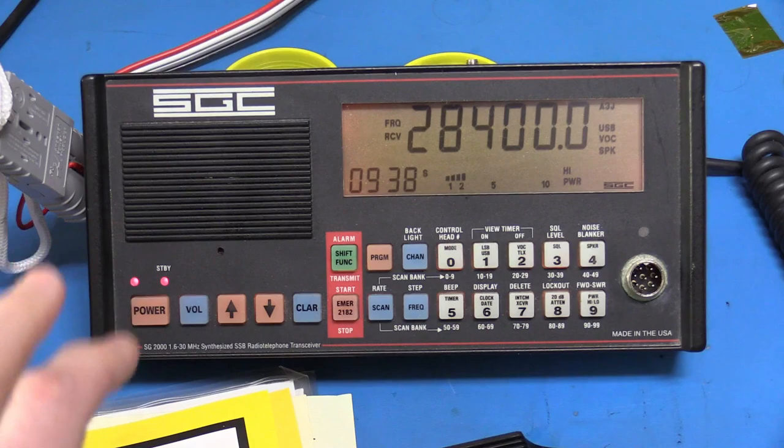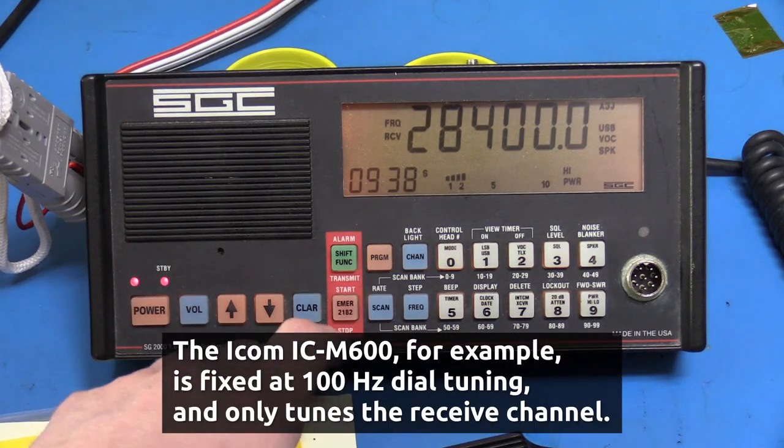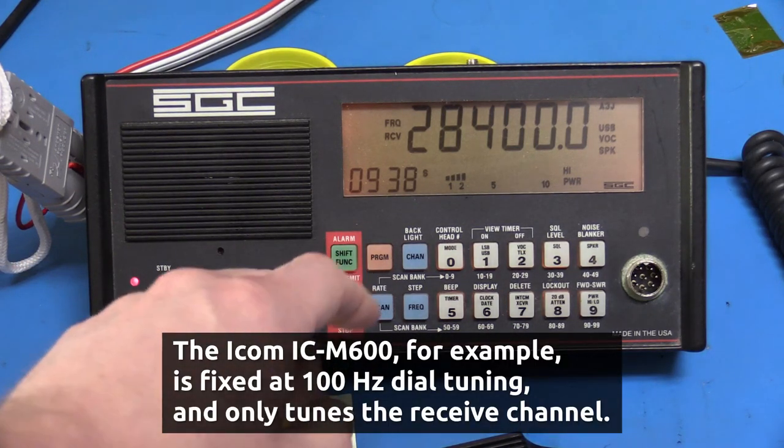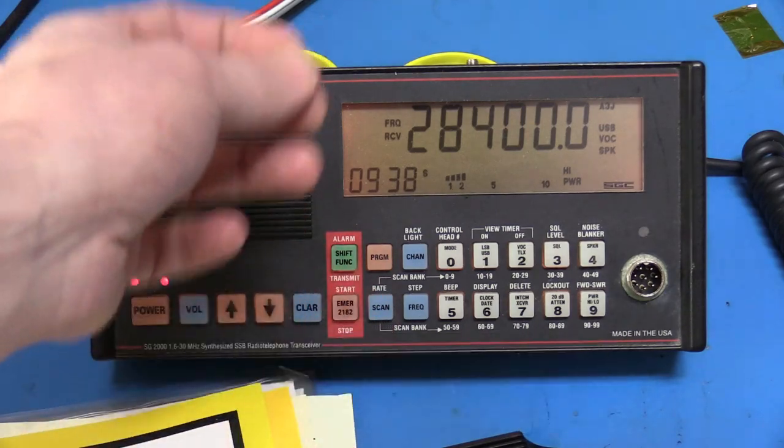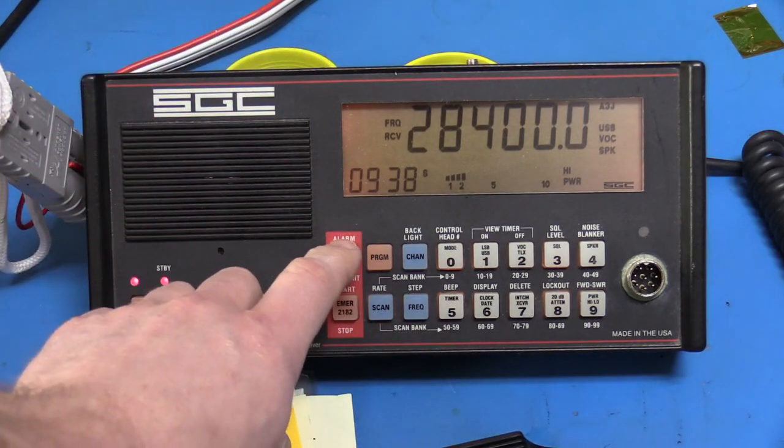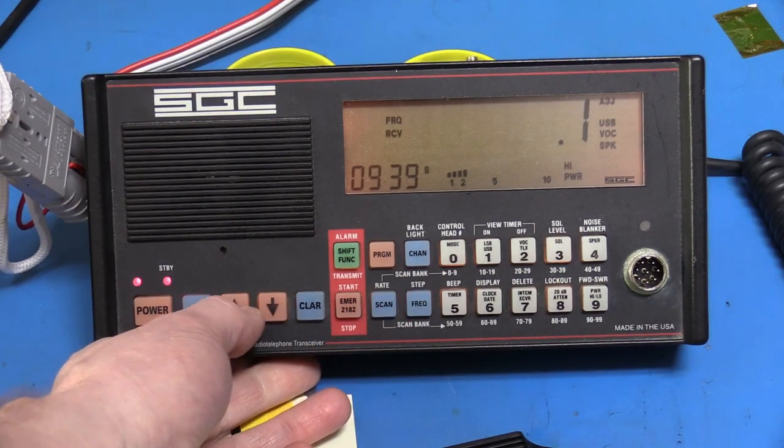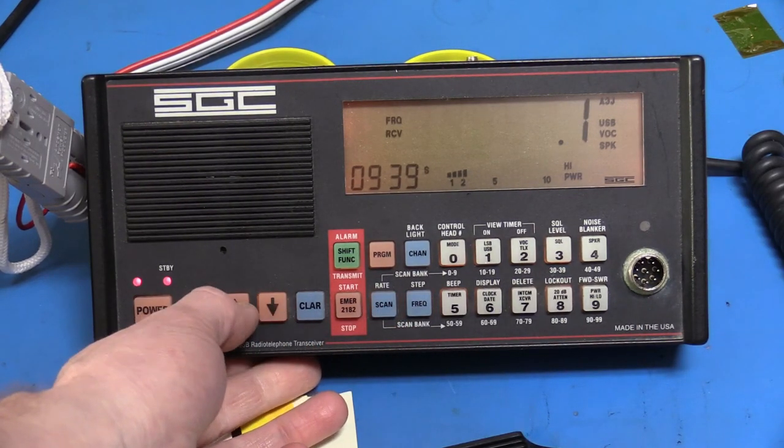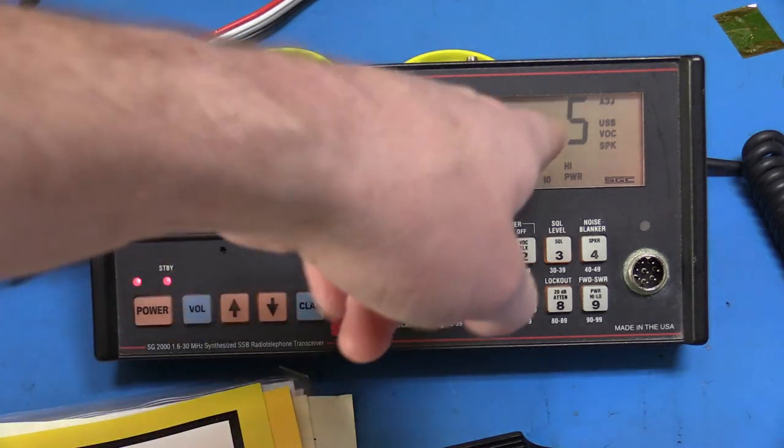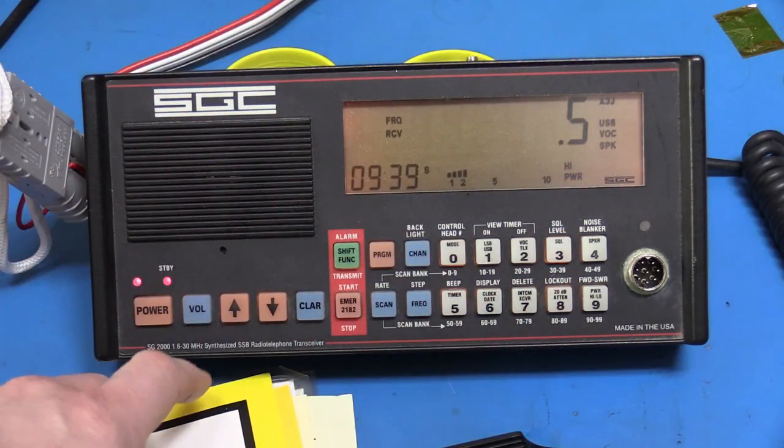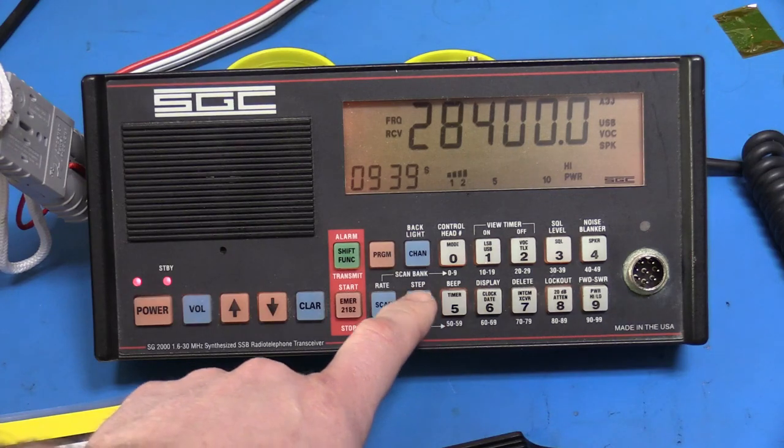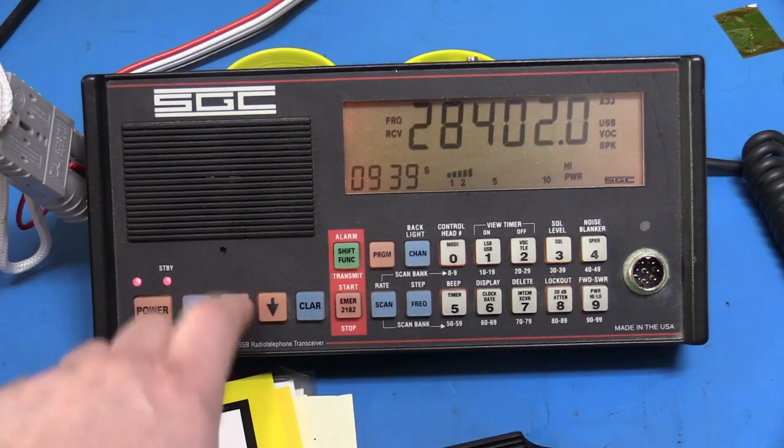So you hit shift. When it beeps twice it means the button kind of bounced, so I need to clean the pads. Shift. Step. There we go. Now we can choose the tuning step down to 100 hertz. To get out of this you can just wait, or you can press volume. And then press frequency again. Then you can use it.